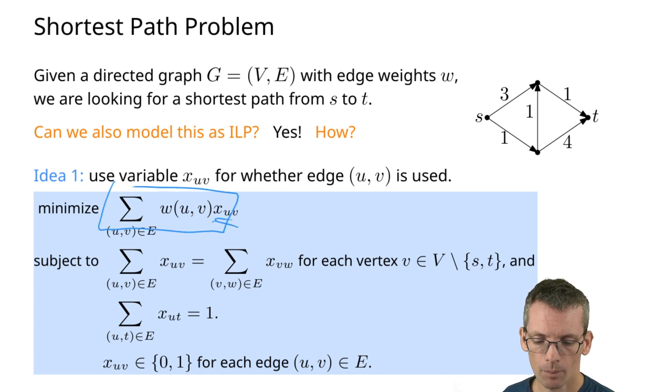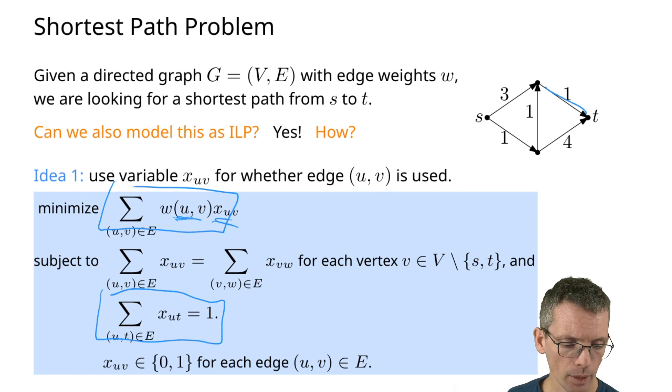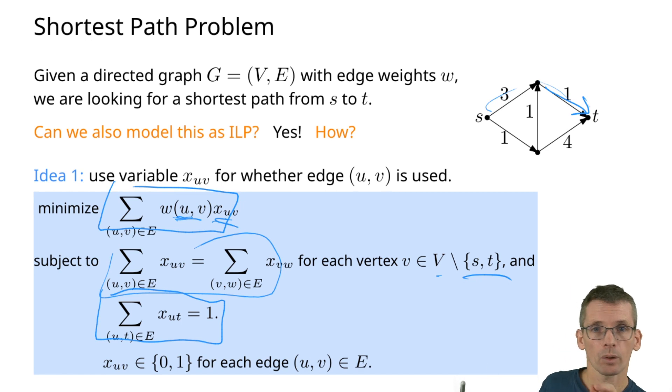We want to minimize the sum of weight times x_uv. If I look at the edges going into t, exactly one should be selected, so the sum of the x_ut's should be one. For every other vertex, what I want is that number of incoming edges equals number of outgoing edges. In that way I can propagate backwards, and I only ask for this for all vertices except s and t. This one edge that goes into t will have to, at the vertex where it comes from, also have an incoming edge, and from there again an incoming edge, and so on. I can stop only if at some point I am at s. So this is an integer linear program for shortest path.